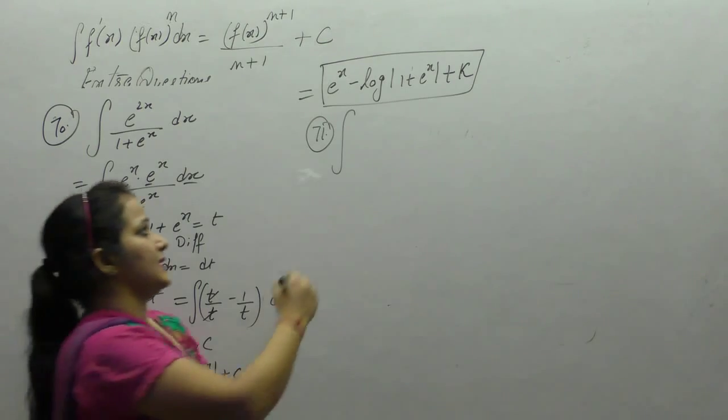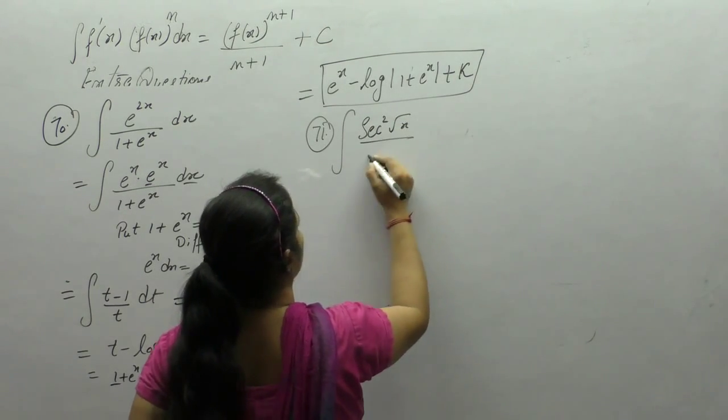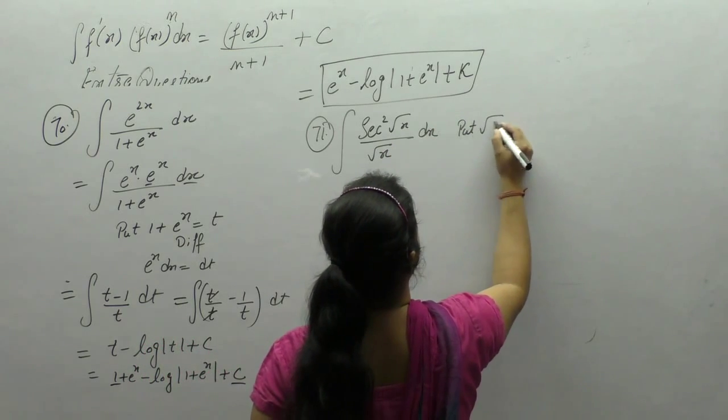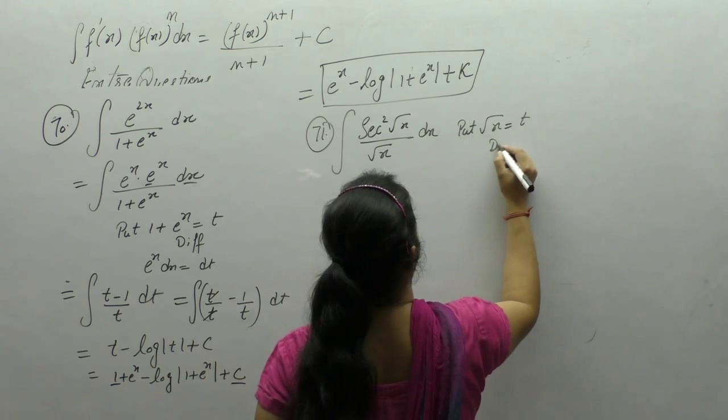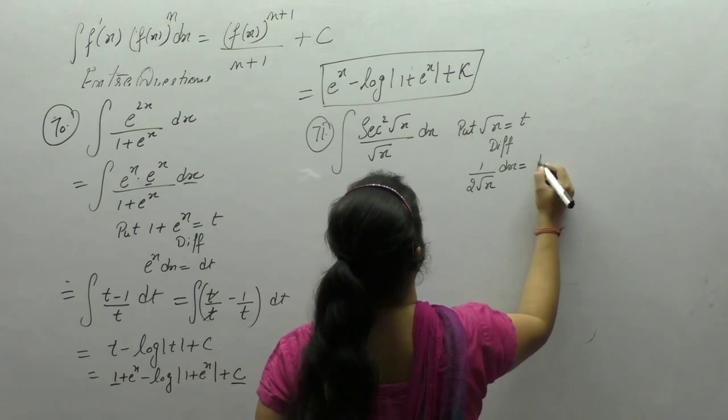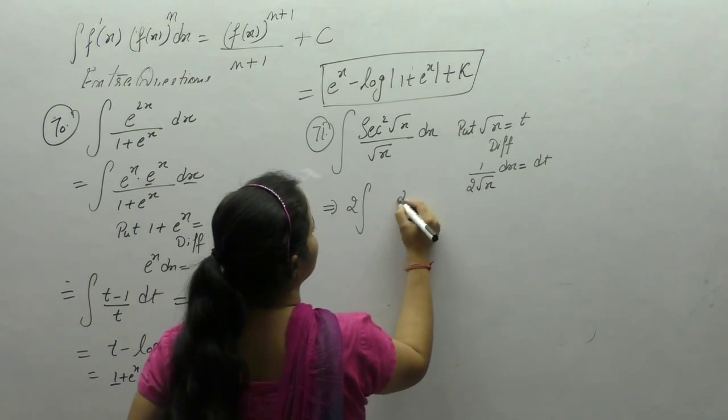Next is sec square root x upon root x dx. Put square root of x as t. Derivative of root x is 1 upon 2 root x, dx is dt. 1 upon root x dx is 2 dt.